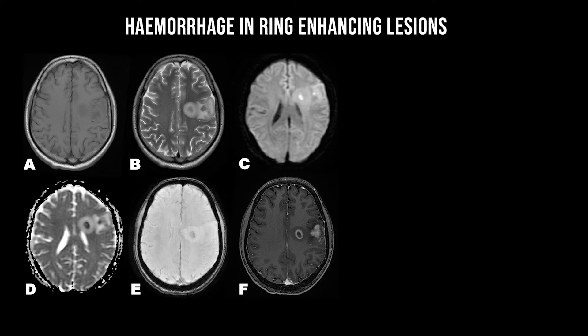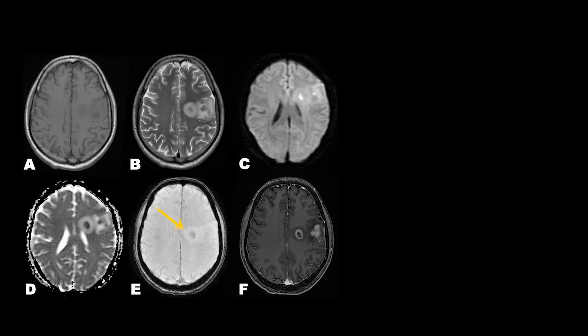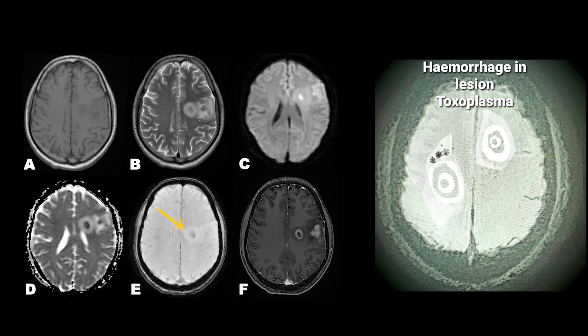Hemorrhage in ring enhancing lesions is seen most probably in toxoplasmosis, where the wall can show hemorrhage. In glioblastoma, hemorrhage can be seen due to neovascularity. This is a case of toxoplasmosis in an immunocompromised patient — you can see central restricted diffusion and also hemorrhage in the susceptibility-weighted images, showing hemorrhage within the walls.